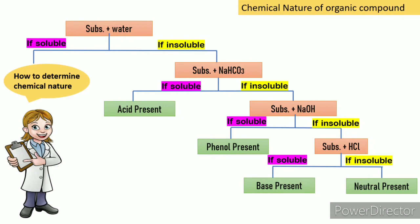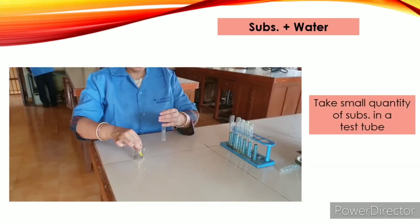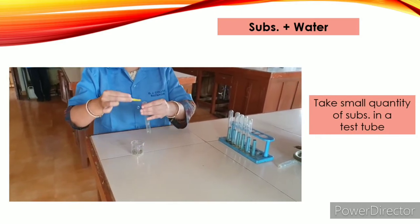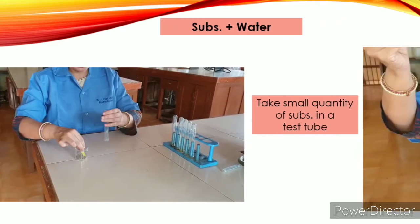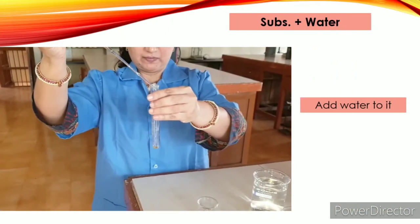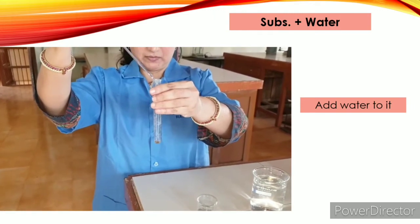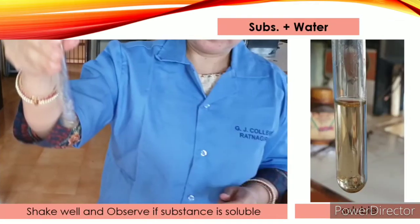Whenever organic substance is given to you for identification, you first observe color, odor, and state of compound, and then you go for solubility test. First thing, check solubility of substance in water. So take small quantity of substance in test tube and add some water to it.